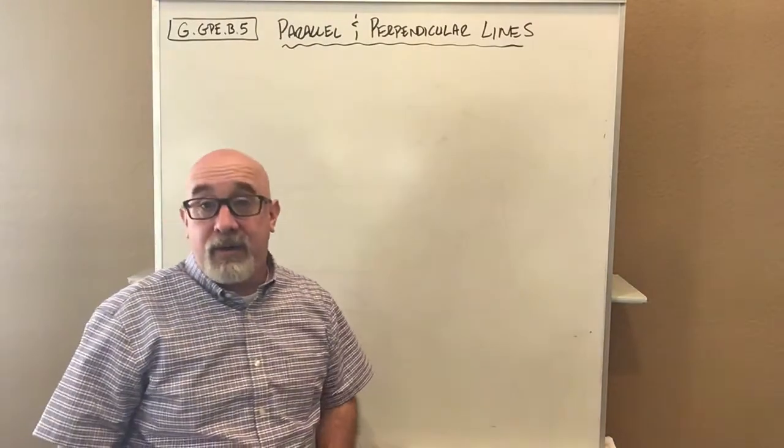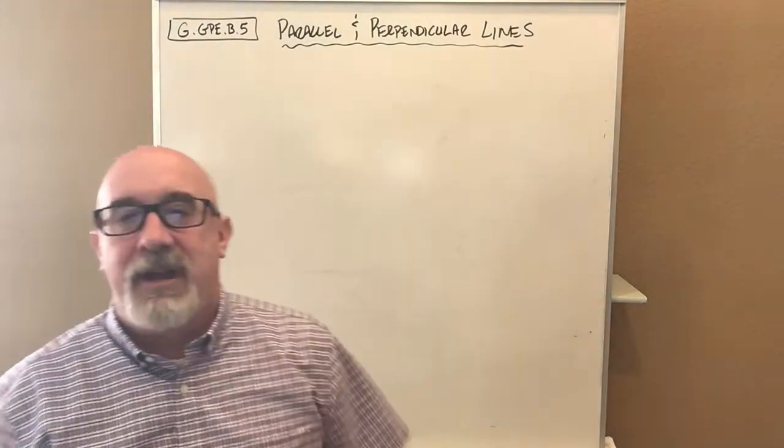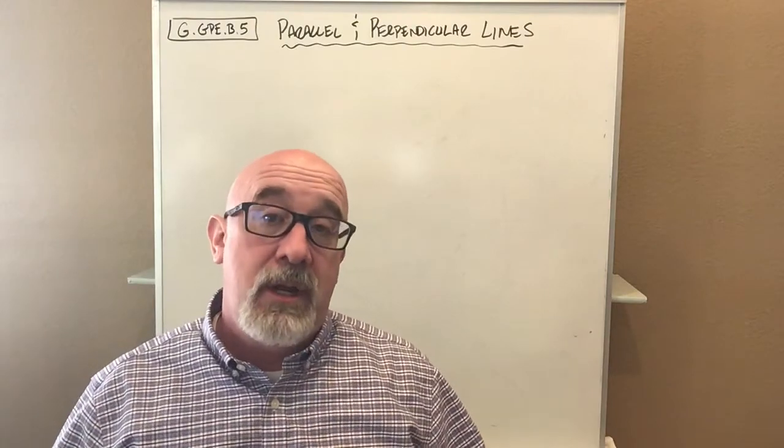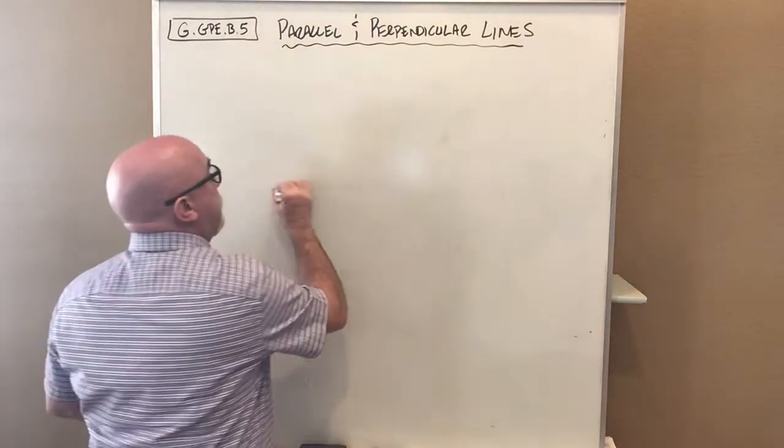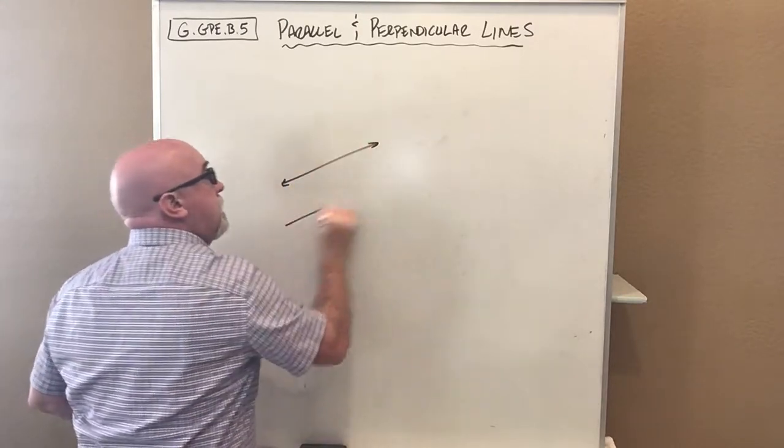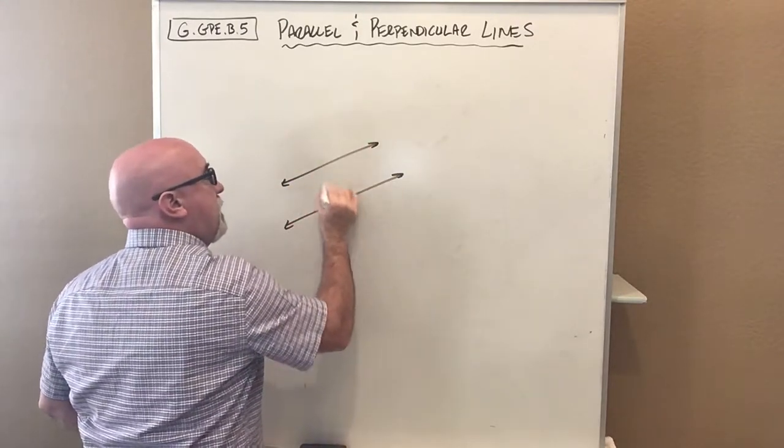Let's take a look at parallel and perpendicular lines. We've already looked at those in terms of transversals off the coordinate grid. We know these are parallel lines.